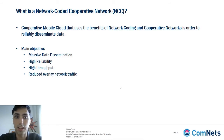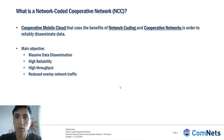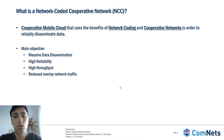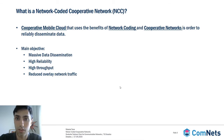The main objective of these networks is that we will have massive data dissemination to multiple users that coexist in the same place, with high reliability because of network coding, high throughput also because of network coding, and as an outcome we will also reduce the overlay network traffic, whatever this overlay network is.